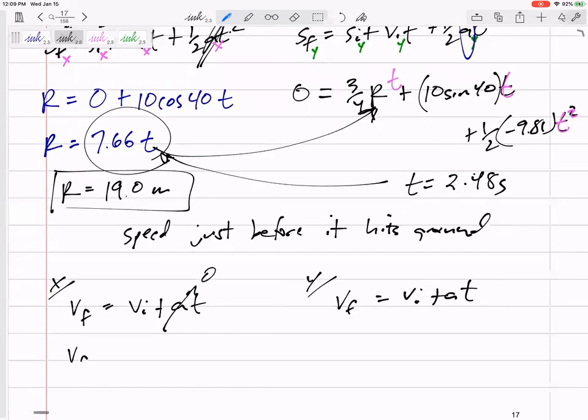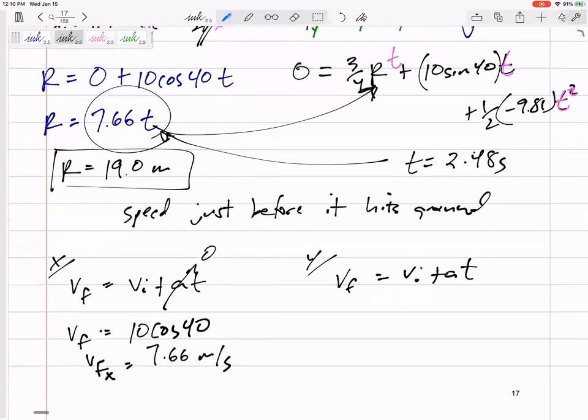So, V final in the X is still 10 cosine 40. V final in the X is 7.66 meters per second. All right. But the Y, we really will need to calculate this one.